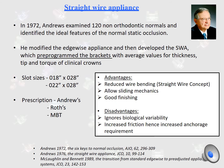The next system is the straight-wire appliance or pre-adjusted edgewise appliance. In 1972, Andrews examined 120 non-orthodontically treated normals and identified the ideal features of normal static occlusion. He modified the edgewise appliance and developed the straight-wire appliance, which pre-programs the bracket with average values for in-out, tip, and torque of the clinical crown. There are two slot sizes in straight-wire appliance brackets: 0.018 inch and 0.022 inch. There are three types of prescription brackets: Andrews, Roth, and MBT.